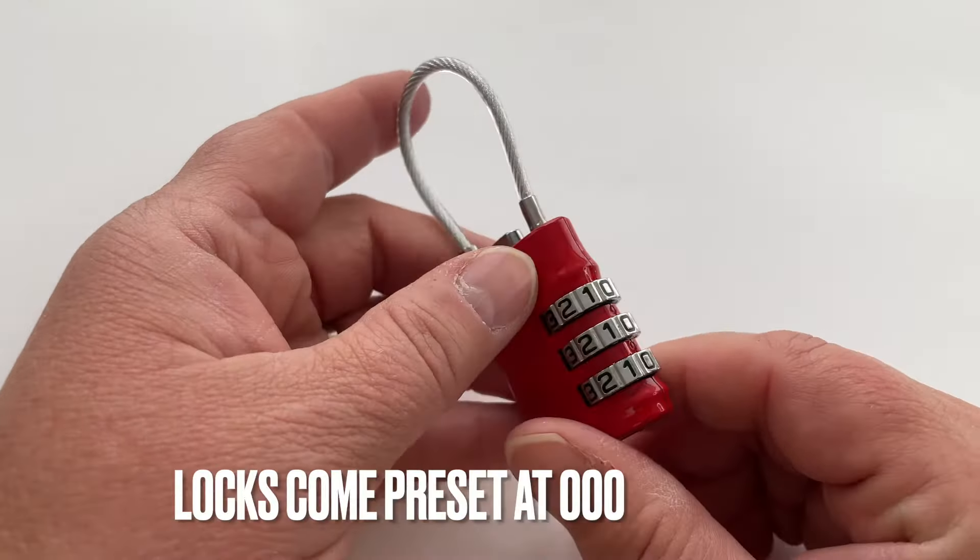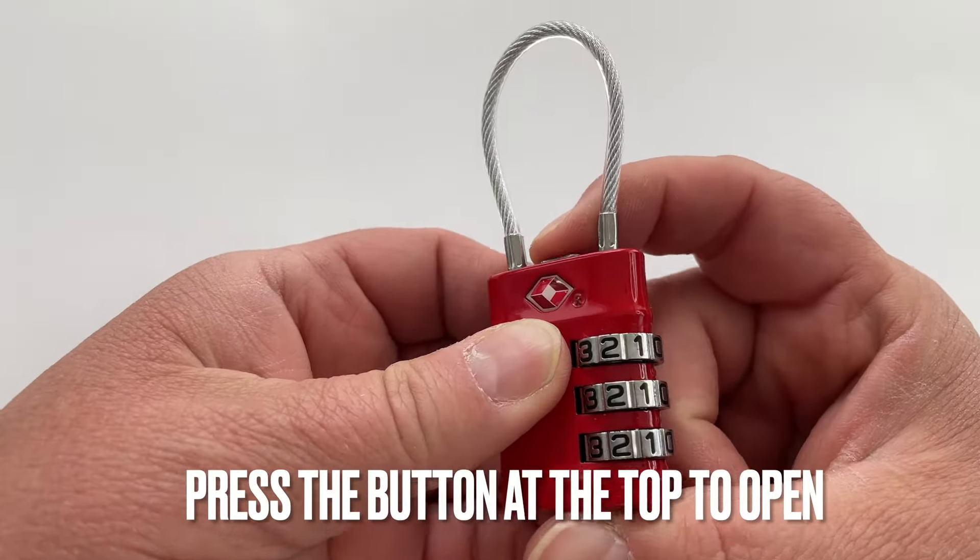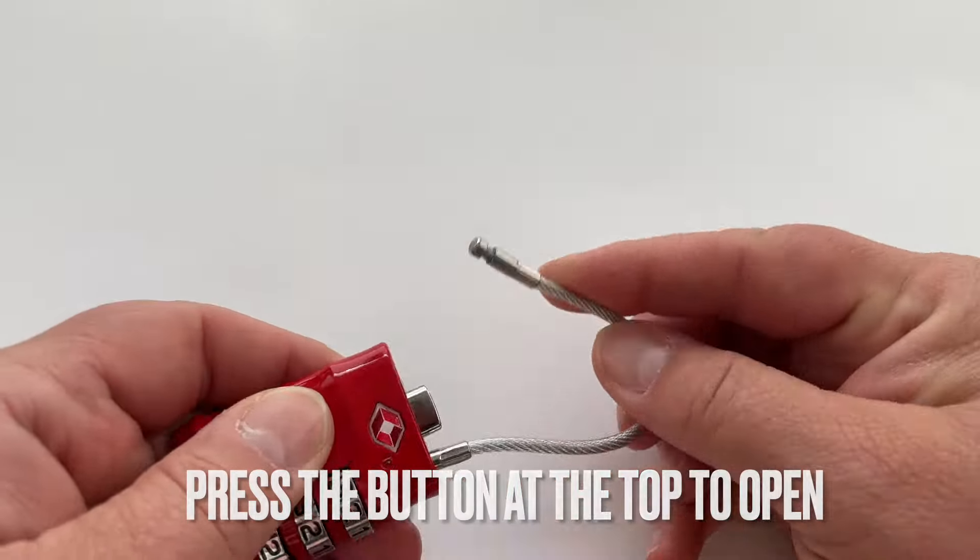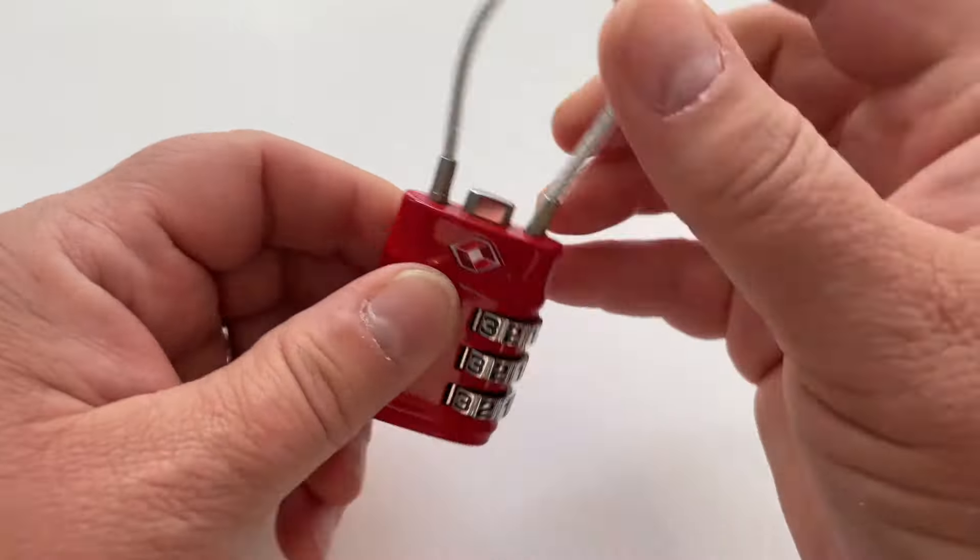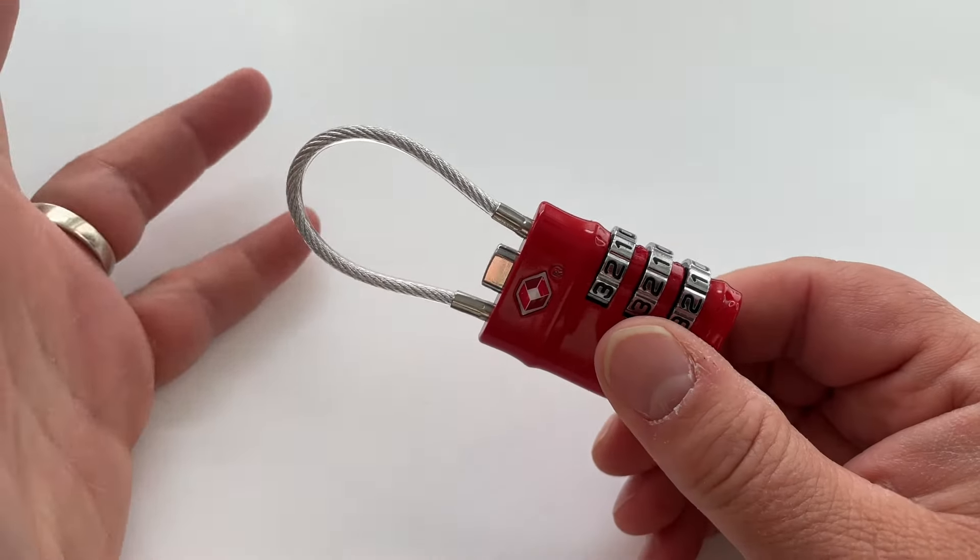The lock comes preset at zero zero zero. If you want to change the combination, it's super easy. First I'll show you how this opens: zero zero zero, press the button, and it releases the cable lock. These are perfect for purses, bags, and small backpacks. They're great for travel. They're not meant to be Fort Knox, they just keep sticky fingers out of your bags.